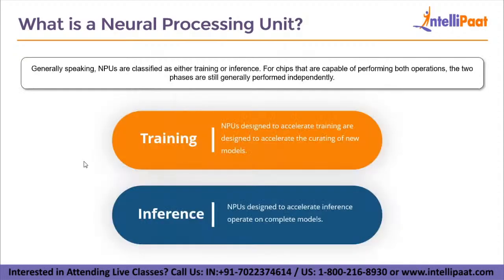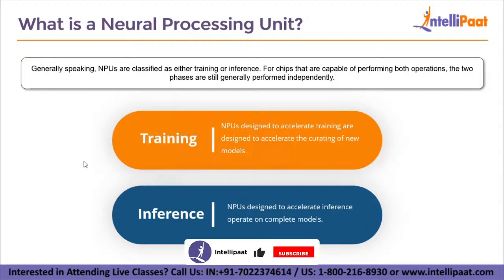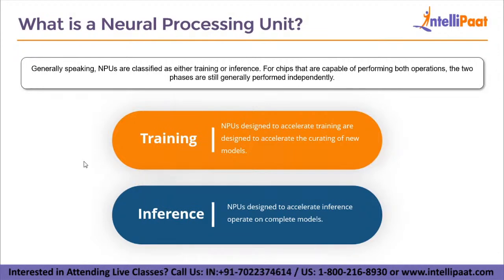Generally speaking, NPUs are classified either as training or inference. For chips that are capable of performing both operations, the two phases are still generally performed independently. So even if the chips have both training and inference capabilities, they are independent of each other, and we also have different chips for training and different chips for inference.